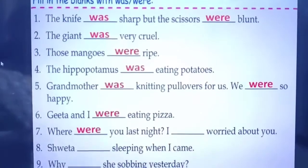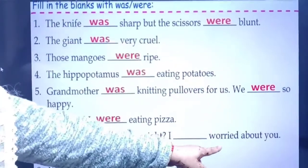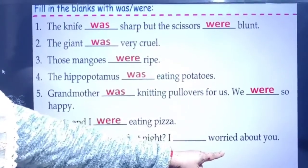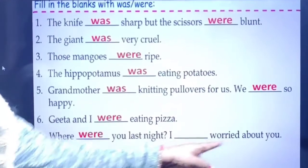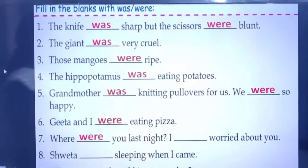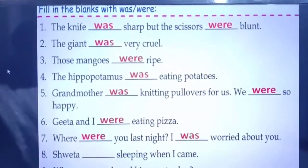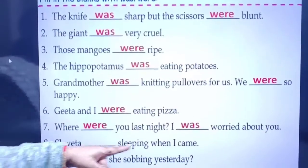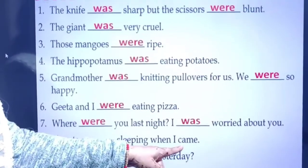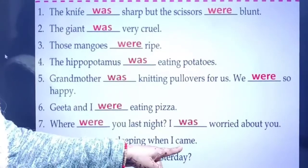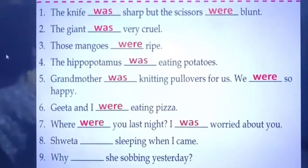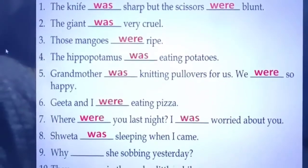Next: 'I ___ worried about you.' The action word worried means the action has already happened. Along with I, we always write was. So: I was worried about you. Next: 'Shweta ___ sleeping when I came.' When I came means the action already happened, and Shweta is singular, so: Shweta was sleeping when I came.